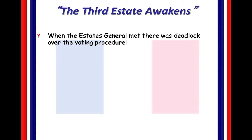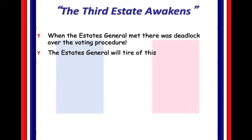The Estates General is going to be convened in May of 1789. We are going to see France attempt to solve the problem of debt and solve their problems amongst each other. This is where things start to go down, and we see this awakening of the third estate. I just want you to understand the big picture here — the Estates General is convening, they're talking, and they can't agree on the voting procedure.